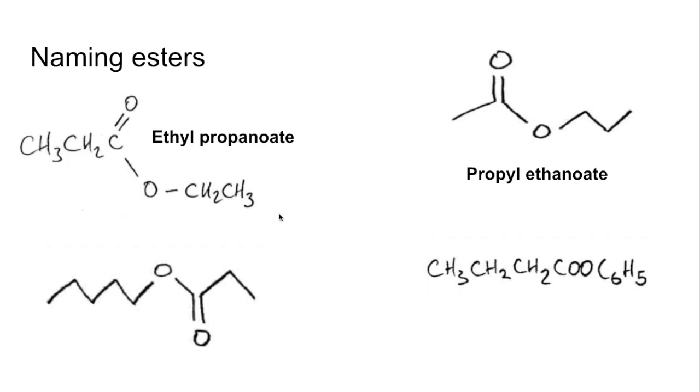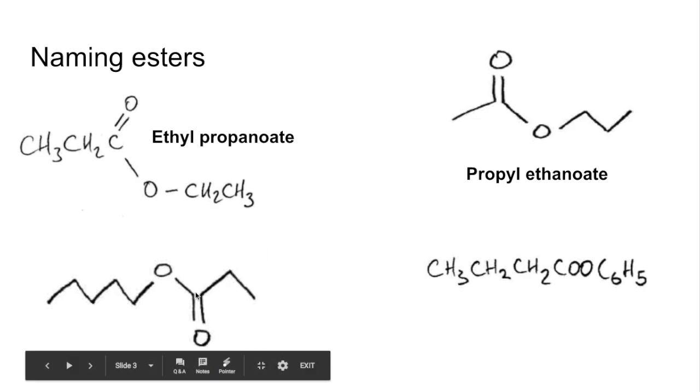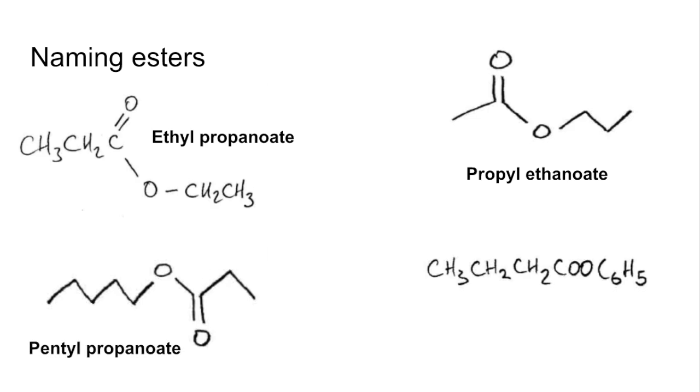And this one here, just be careful because the bit with the single bonded oxygen is actually this part here. So you've got one, two, three, four, five carbons in that part. So that's pentyl. And then at this part we've got one, two, three. So that's pentyl propanoate.